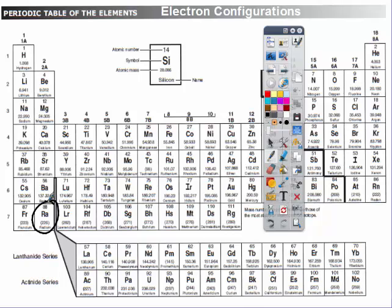Radium is here. So the noble gas before it is radon. And then simply 7s2.